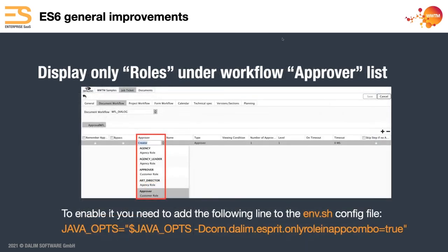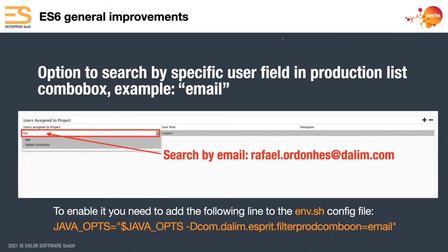You can have it display only roles under the workflow approver list using a Java ops option — instead of showing a list of thousands of users, it'll specifically just show roles. You can also use another Java ops option to set which user field is available for searching to find a user, so if you always know the email address, you can search by that.